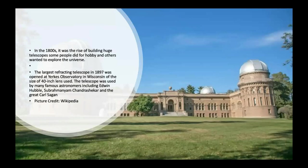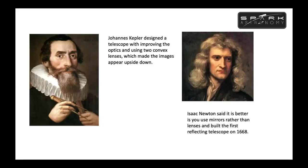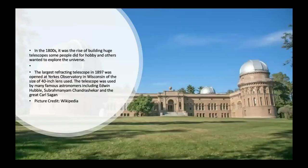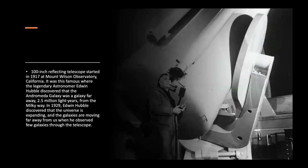These telescopes keep getting bigger and bigger over time. If you come back to this picture: in 1668 we made the first reflecting telescope; in the 1800s it was the rise of huge telescopes; the largest refracting telescope with a 40-inch lens was at Yerkes Observatory in 1897. Then a 100-inch reflecting telescope started in 1970 at Mount Wilson Observatory in California — the famous place where legendary astronomer Edwin Hubble discovered that the Andromeda galaxy was a galaxy far away.